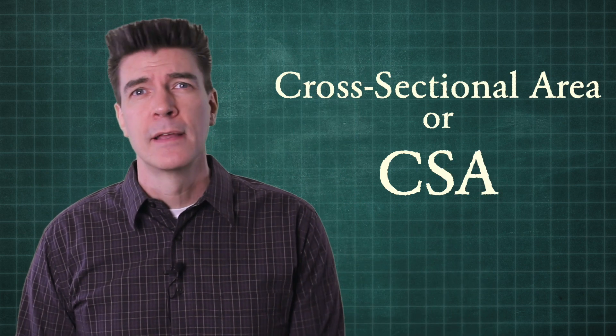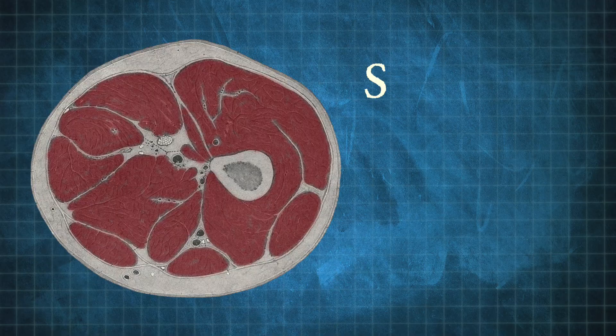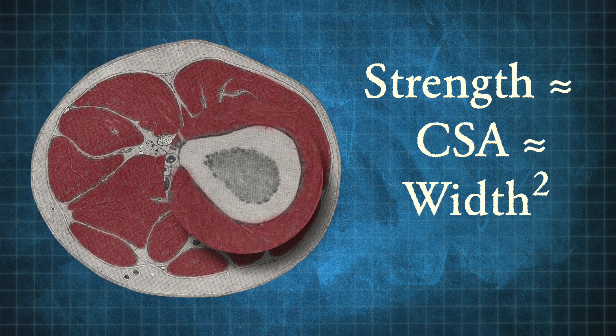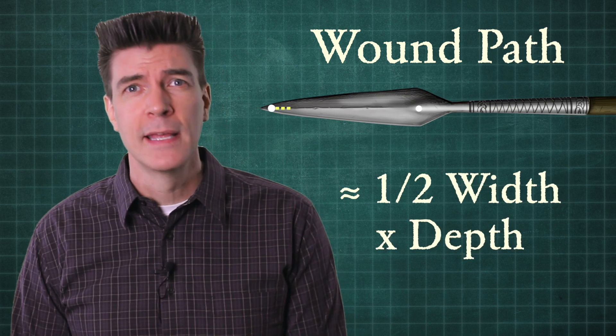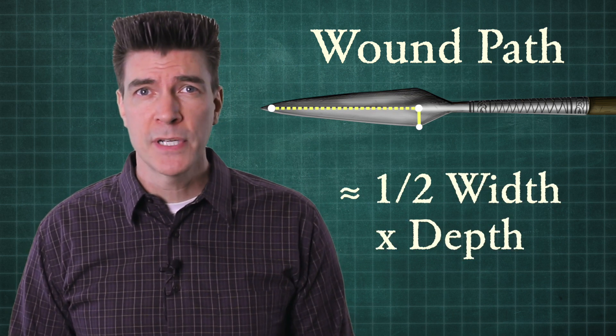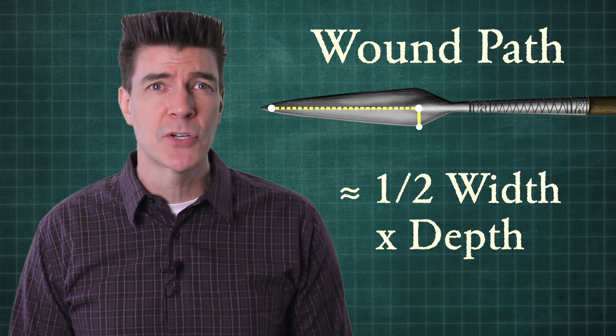Perhaps the most important variable for injury resistance is a creature's cross-sectional area. I talk about cross-sectional area in Episode 1. From a biomechanical standpoint, the cross-sectional area of a bone determines the amount of force it can withstand before breaking. So for blunt damage especially, cross-sectional area is a key parameter. For cutting and piercing damage, there are a couple of dynamics in play, and cross-sectional area makes sense here because most cutting and piercing injuries are two-dimensional in nature.